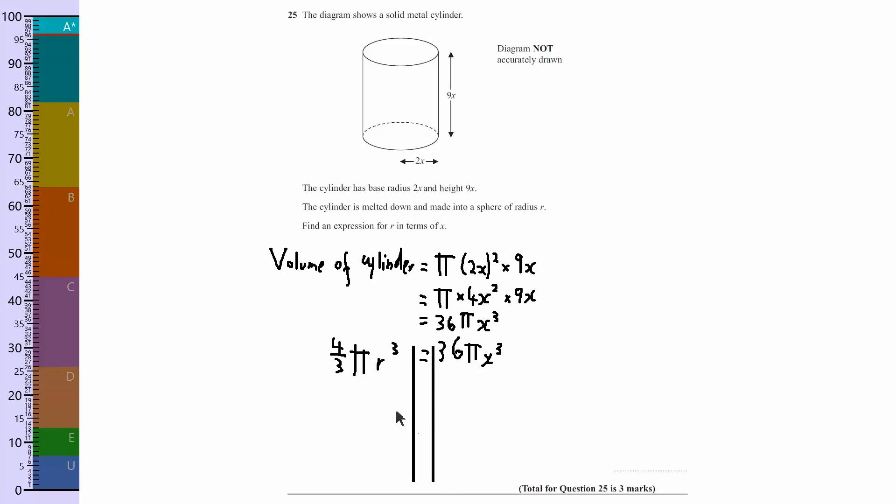What I'm going to do is explain to the side to save some space. So, 4 thirds r cubed equals 36x cubed, and I'll put in brackets here, divide by pi, which is what I've just done.